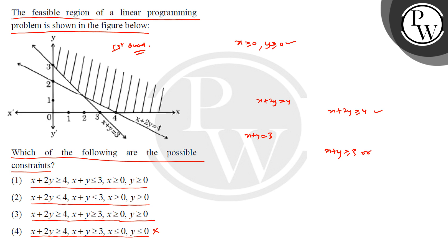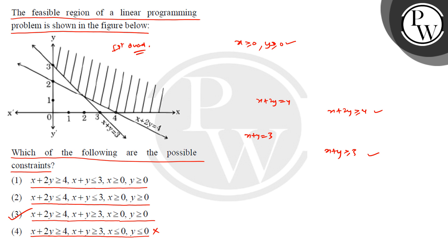Now we check the second constraint. Testing x plus y: 0 plus 0 is not greater than or equal to 3, so the constraint is x plus y is greater than or equal to 3. These four constraints together give us the feasible region, which matches option 3: x plus 2y greater than or equal to 4, x plus y greater than or equal to 3, x greater than or equal to 0, y greater than or equal to 0. So the third option is the correct answer. I hope you understood it well. Best of luck!